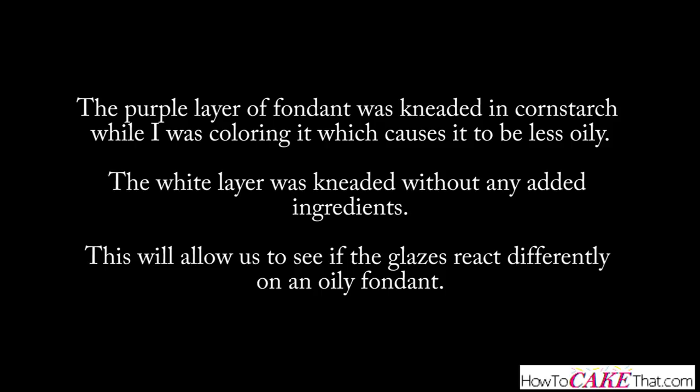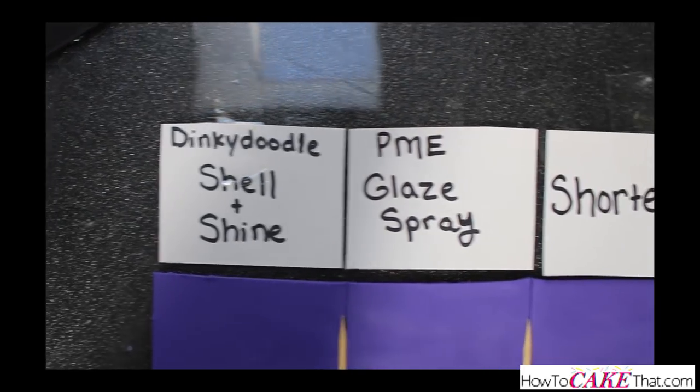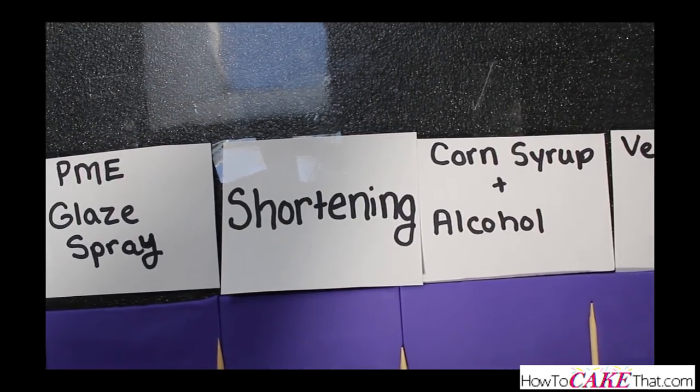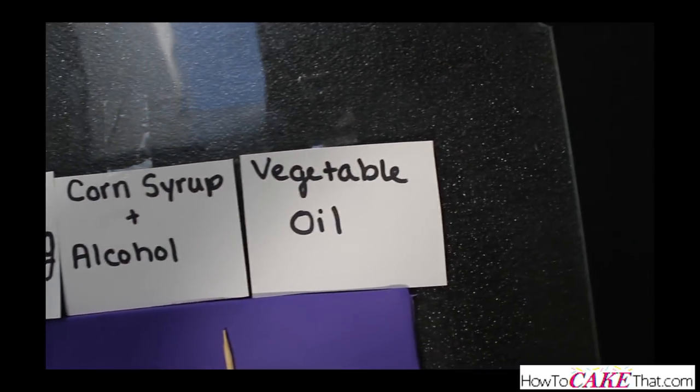This will allow us to see if the glazes react differently with an oilier fondant. Also, the white layer will allow us to see if any of these products will discolor your fondant. The products I will be using are Dinky Doodle Shell and Shine spray, PME glaze spray, shortening, corn syrup and alcohol, and vegetable oil.